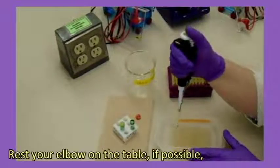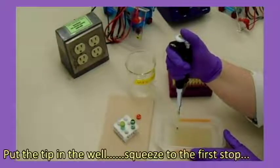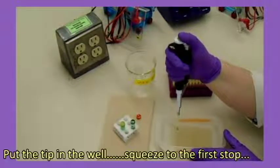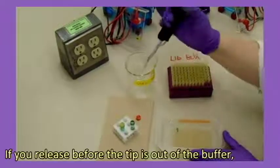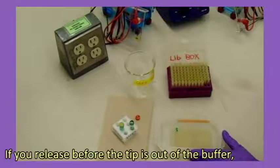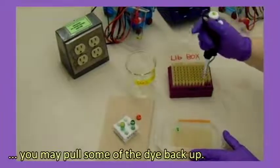Rest your elbow on the table, if possible, to keep your hands steady. Put the tip into the well. Squeeze to the first stop. Lift the tip out, then release the plunger. If you release before the tip is out of the buffer, you may pull some of the dye back up.